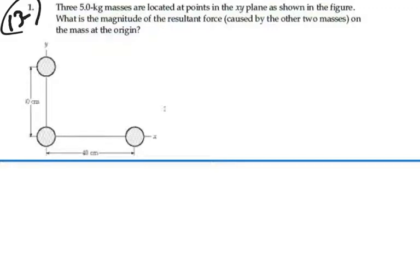So we have three masses, all of them 5 kilograms. These first two masses are 30 centimeters or 0.3 meters apart, and these other two are 0.4 meters apart, 40 centimeters. We want to find the force on the mass at the origin.